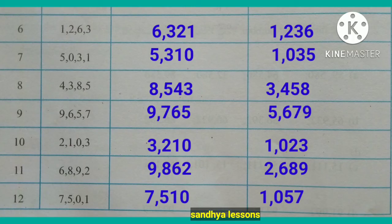With digits 2,1,0,3: largest 4-digit number is 3,210; smallest is 1,023. With digits 6,8,9,2: largest is 9,862; smallest is 2,689. With digits 7,5,0,1: largest is 7,510; smallest is 1,057.